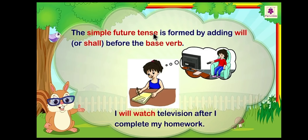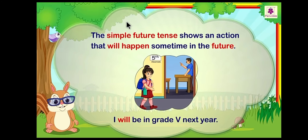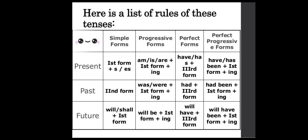The simple future tense is formed by adding 'will' or 'shall' before the base verb. 'I will watch television after I complete my work' — 'watch' is the main verb and 'will' indicates the future tense. Future tense tells us about actions that are going to happen in the future. For example, 'I will be in grade 5 next year' means right now she is not in grade 5, but next year she will be.